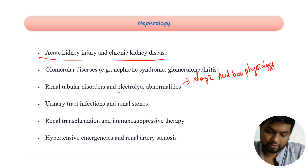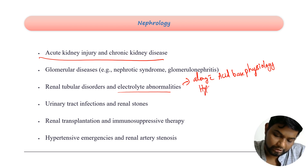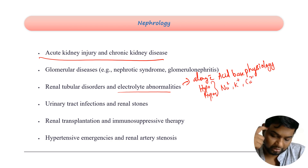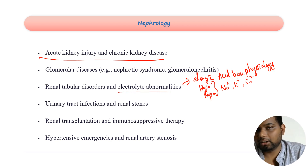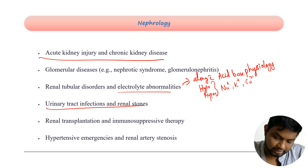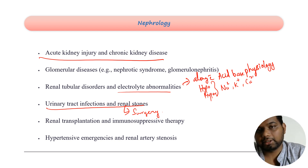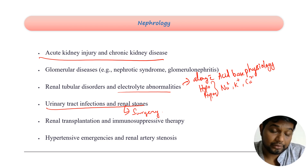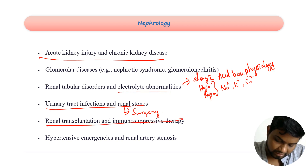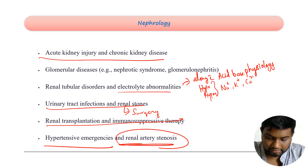Electrolyte anomalies like hypo/hypernatremia and hypo/hyperkalemia should be studied along with acid-base disorders in the physiology section. UTI and renal stones will be studied along with surgery — all types of renal stones along with ESWL and PCNL complications should be mastered together with surgery and medicine. Then you have renal transplantation and immunosuppressive therapy.